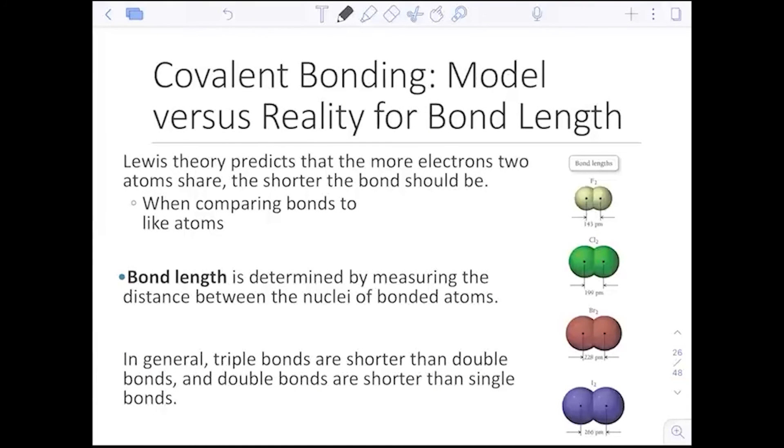Covalent bond reality versus Lewis theory. Lewis theory predicted that the more electrons two atoms shared, the shorter the bond would be. We see that in terms of bond length. It's determined by measuring the distance between the actual nuclei of the atoms. In general, triple bonds are shorter than double, and double bonds are shorter than single bonds.